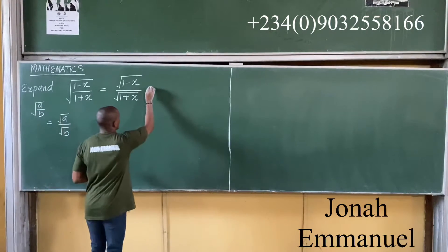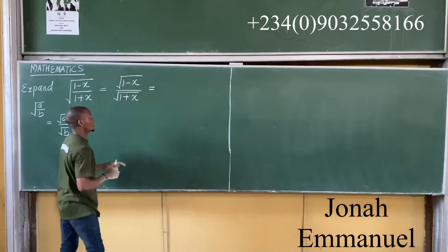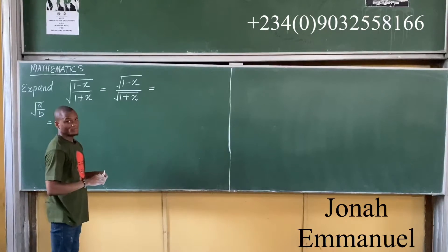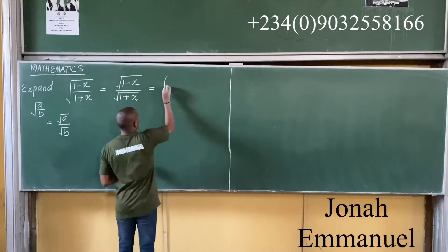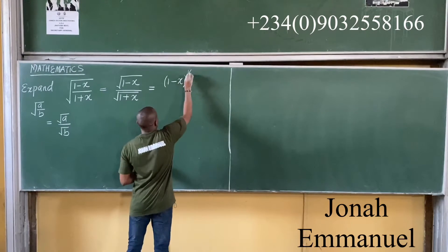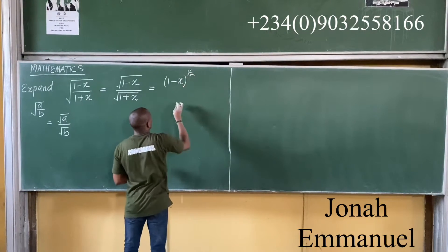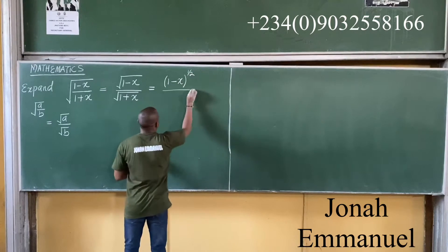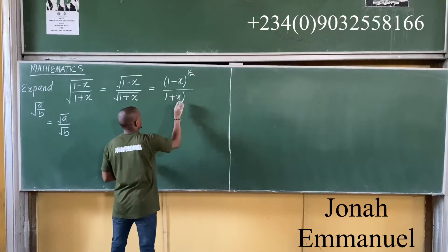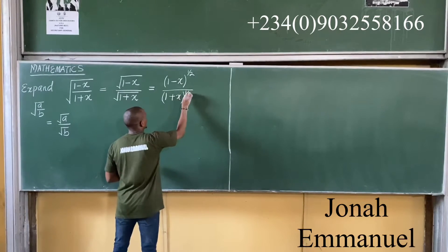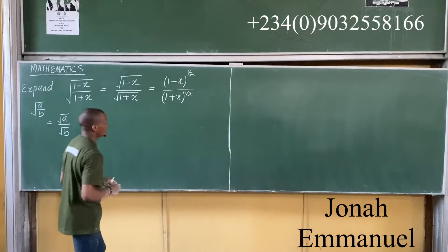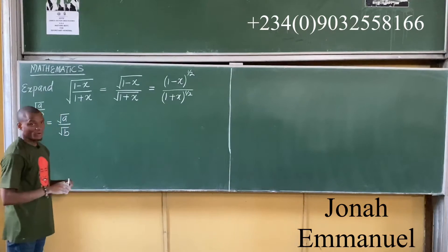My next task is to write them in index form. In index form, this becomes (1 minus x) to the power of 1 over 2, all over (1 plus x) to the power of 1 over 2. So I have both of them in index form.